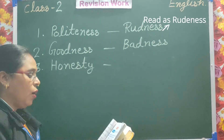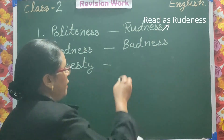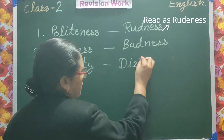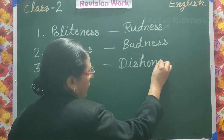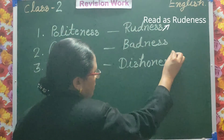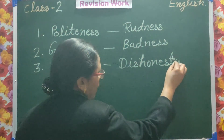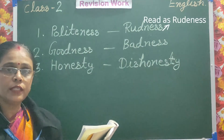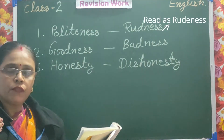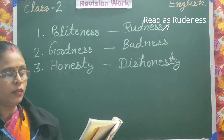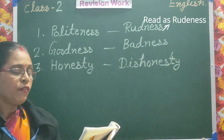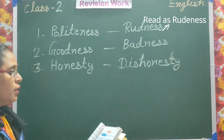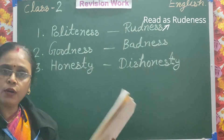The opposite of honesty is 'dishonesty' — D-I-S-H-O-N-E-S-T-Y. Honesty means fair and sincere. And dishonesty means not sincere, not fair.